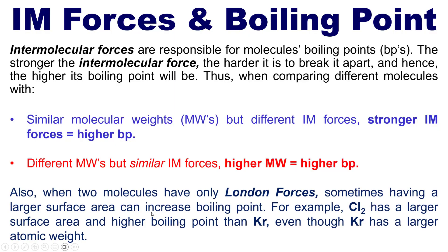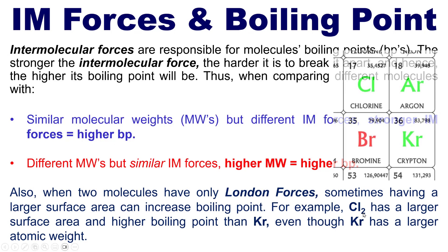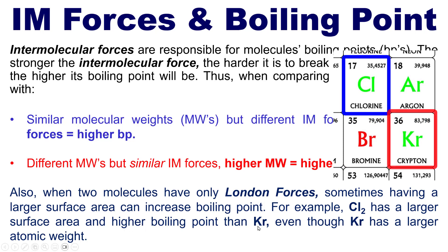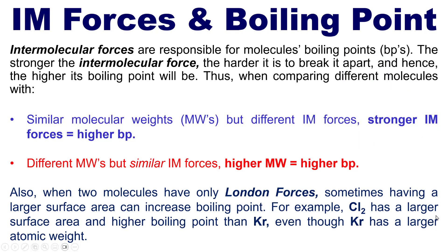Additionally, when two molecules have only London forces, sometimes having a larger surface area can increase the boiling point. For example, chlorine Cl₂ has a larger surface area and a higher boiling point than krypton, even though krypton has a higher atomic weight.